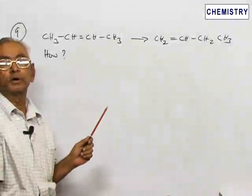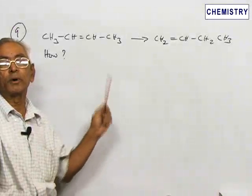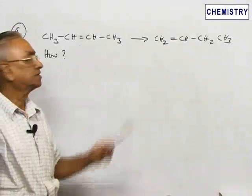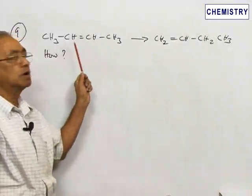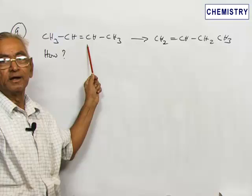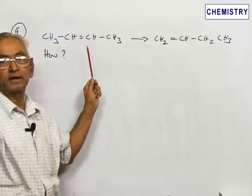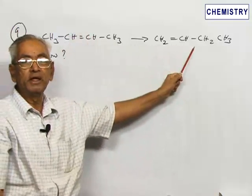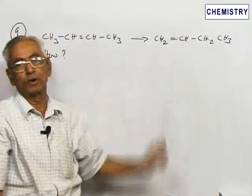This is a question relating to conversion of one compound to the other. The question is: how is 2-butene, that is an internal olefin, converted to 1-butene, which is a terminal olefin?